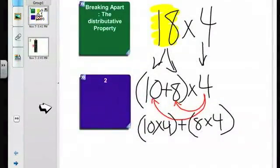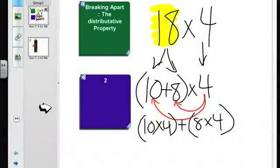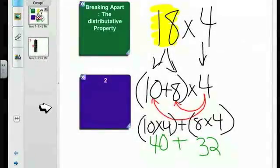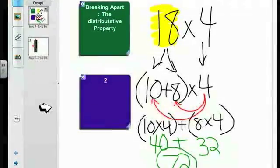So then we can go ahead and solve these two problems. We know that 10 times 4 is 40 and 8 times 4 is 32. We add those together and we get a grand total of 72.